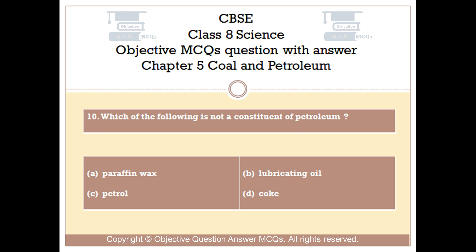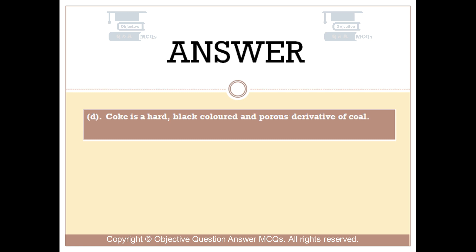The right answer is Option D. Coke is a hard, black colored and porous derivative of coal, not petroleum.